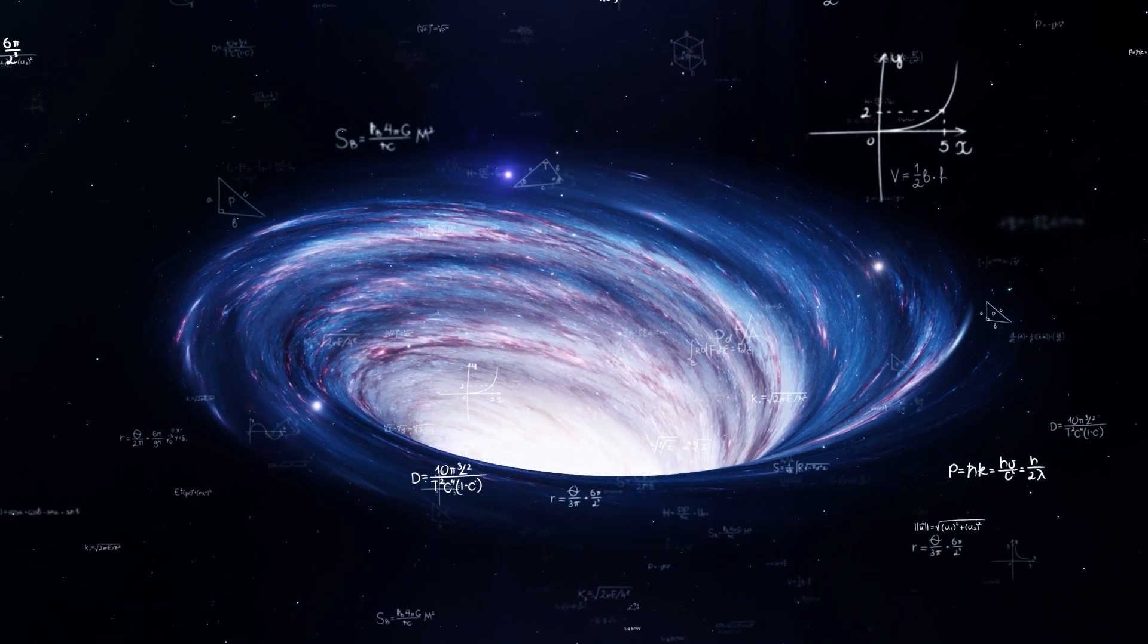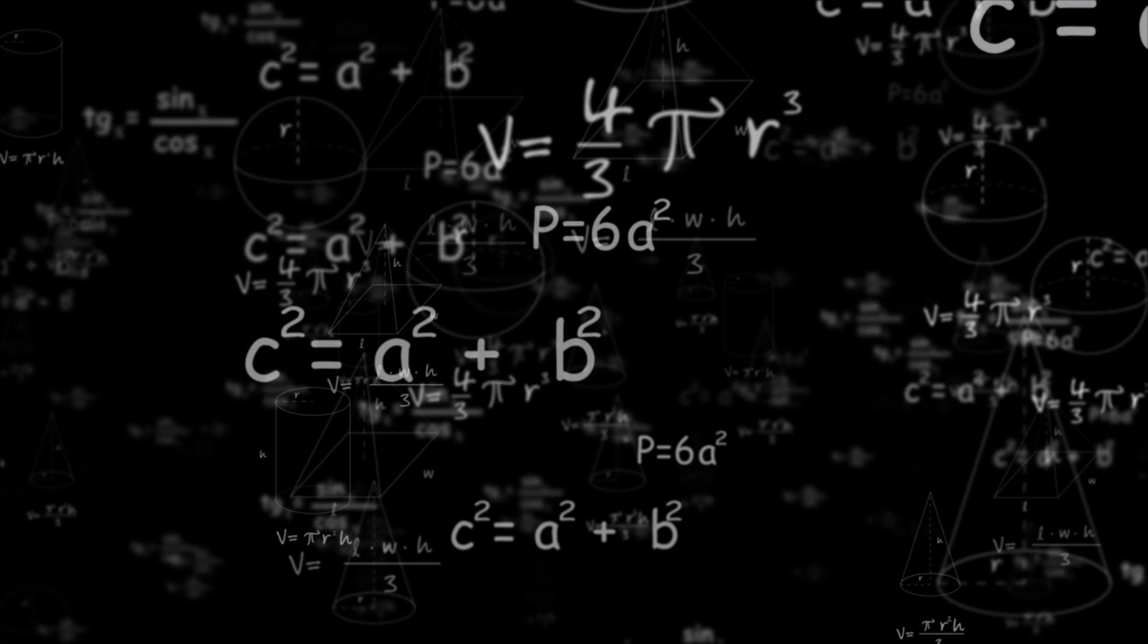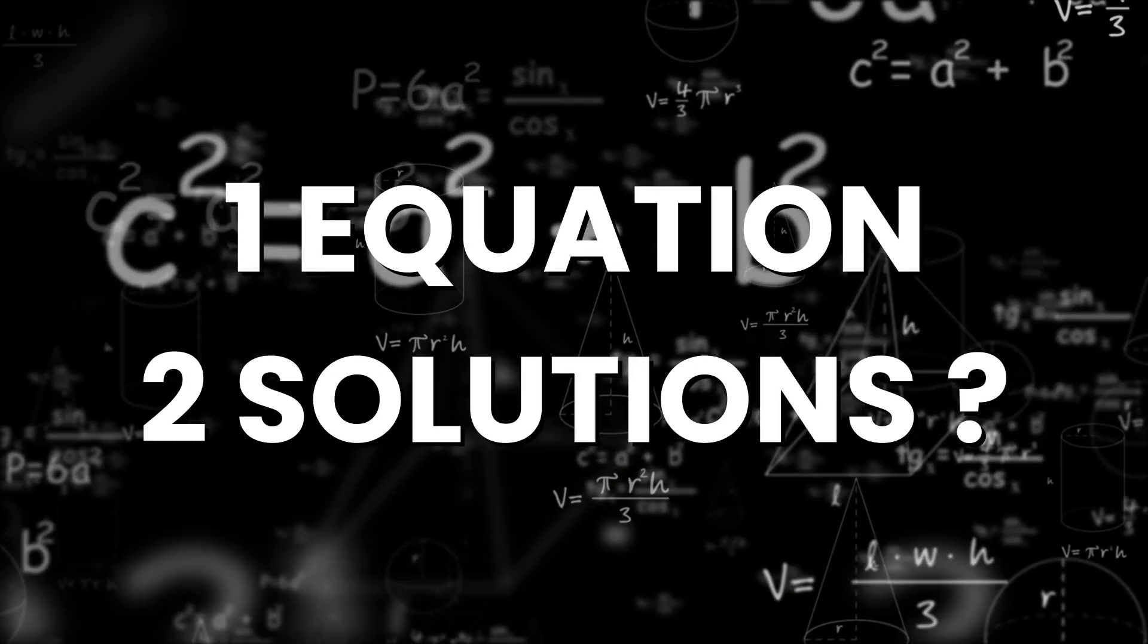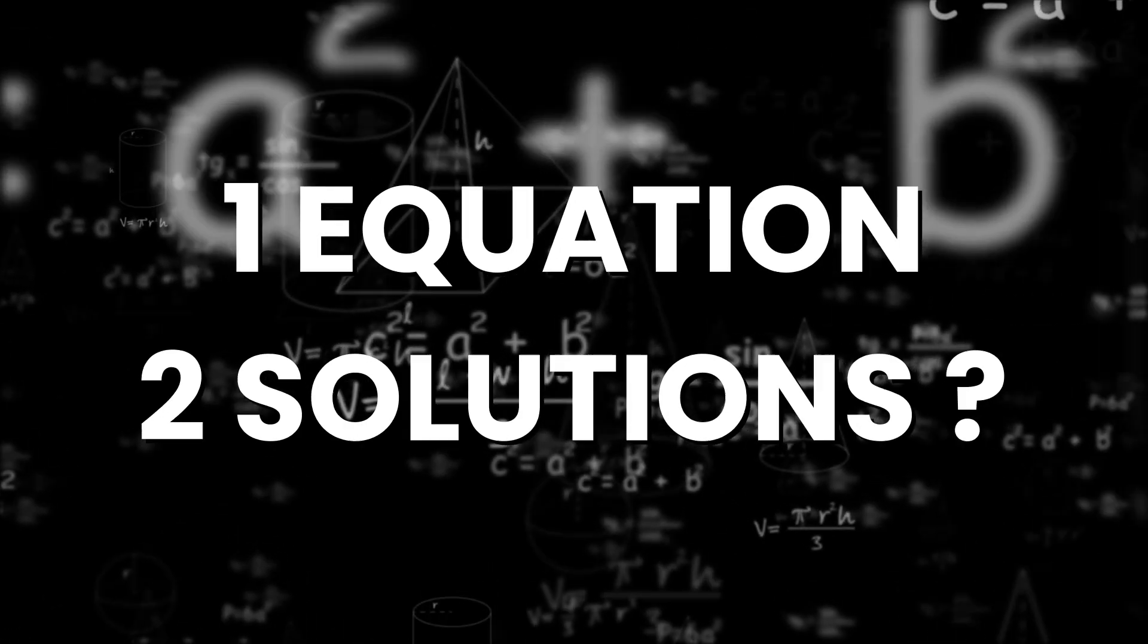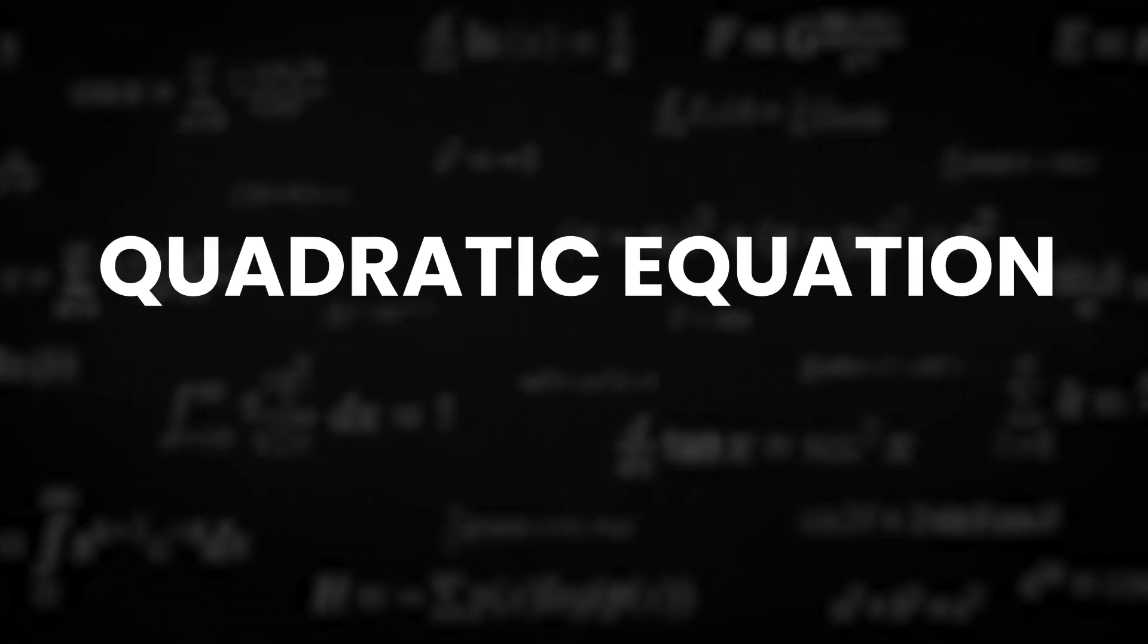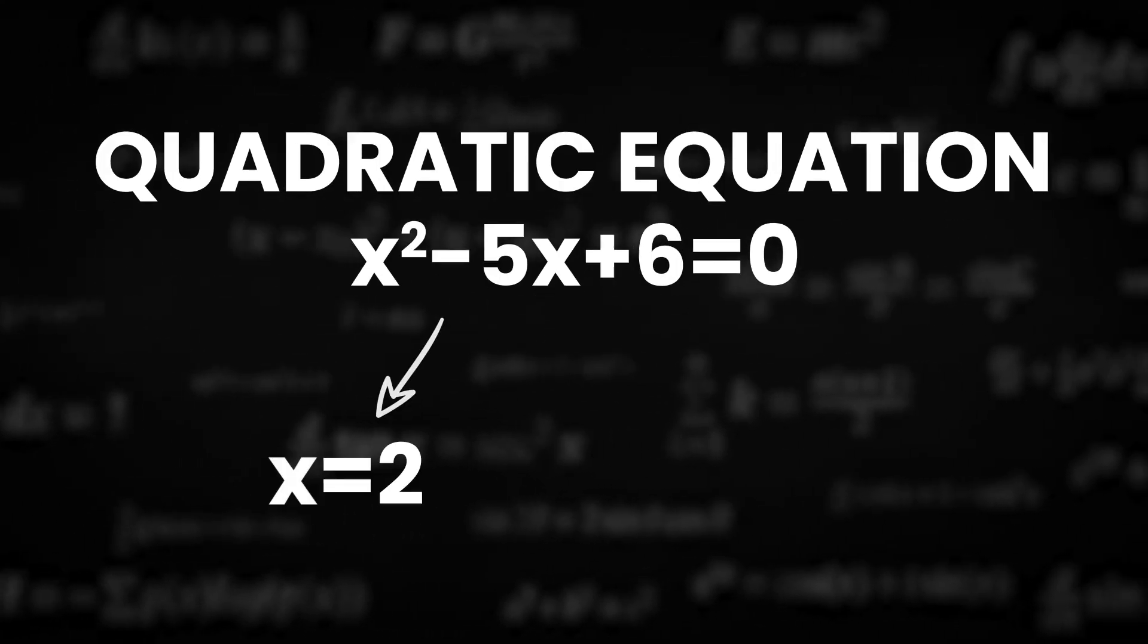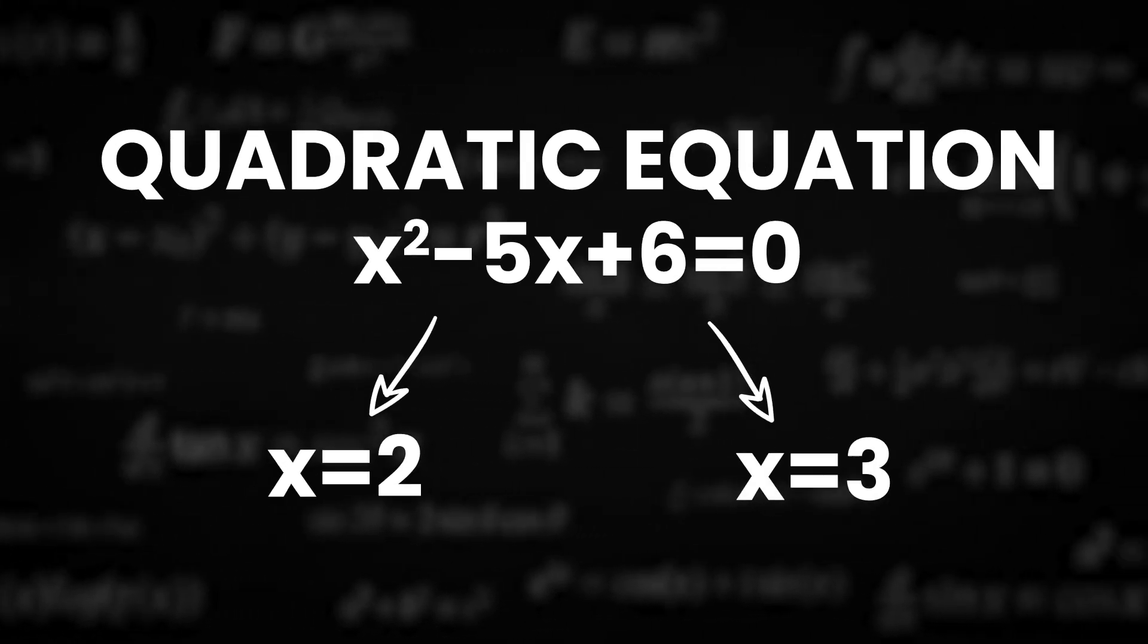Wormholes are another answer to these field equations. You might be wondering how you can solve one equation to get two different solutions. You're probably familiar with the quadratic equation, which you'll have learned in school. This quadratic equation has two solutions, X equals 2 and X equals 3.